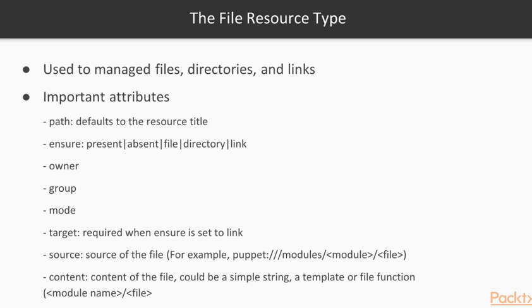The most important attributes for the file resource type are: path, which defaults to the resource title; ensure, which could be set to present (which creates a normal file if the file is not there), absent (which removes the file), file, directory, or link.